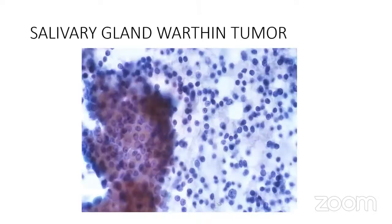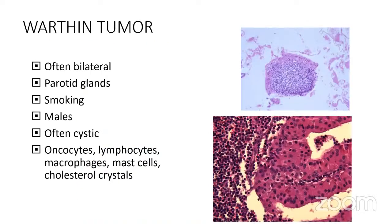Some salivary gland lesions to know. Warthin tumor shows oncocytic cells with lots of lymphocytes, often cystic with dark fluid aspirated, more common in male smokers. On cytology and cell block you see the double layer of oncocytic cells. Histology shows oncocytes, lymphocytes, cystic spaces, macrophages, and cholesterol crystals.